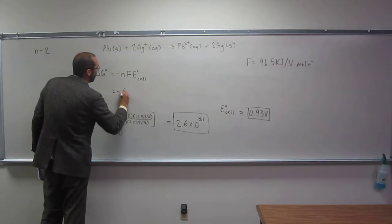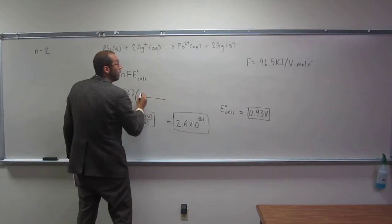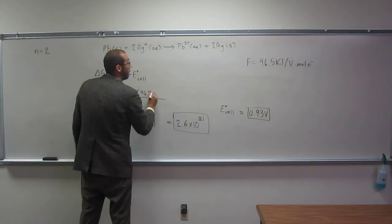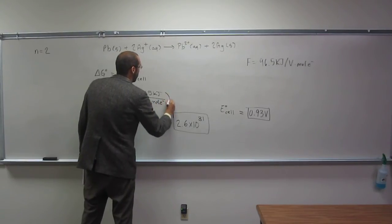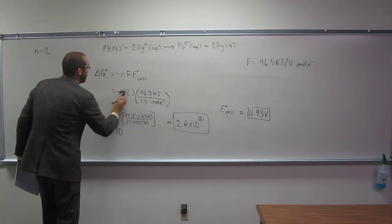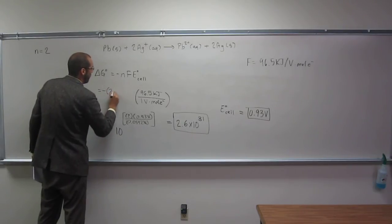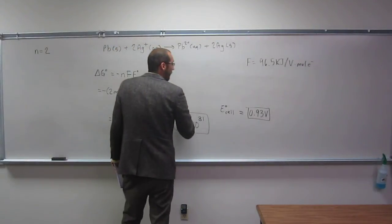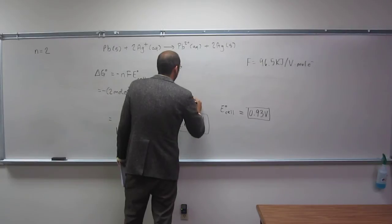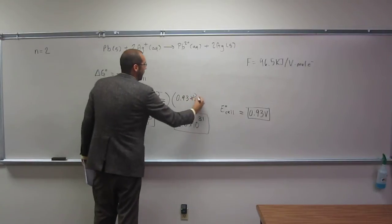So negative 2 times 96.5 kilojoules per volt mole electrons times E cell, which is 0.93 volts. So notice it's mole electrons times volts, volts cancel.